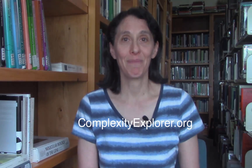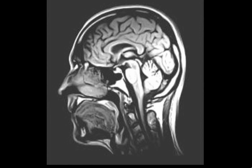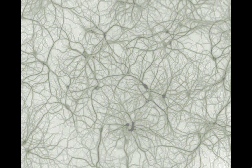What is a complex system? One good example is the brain, in which trillions of neurons interact in complicated ways. Somehow, this vast network of cells and connections produces the highly complex behaviors that we call cognition, or intelligence, or even consciousness. How does this happen?